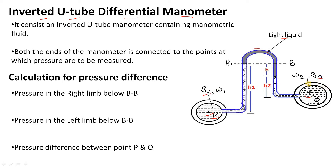These two fluids' specific gravity will be higher than the specific gravity of the light liquid, which has a specific gravity we can call S. Both ends of the manometer are connected to the points at which pressure are to be measured — one end connected to point P and the other to point Q — whose pressure difference we have to measure.